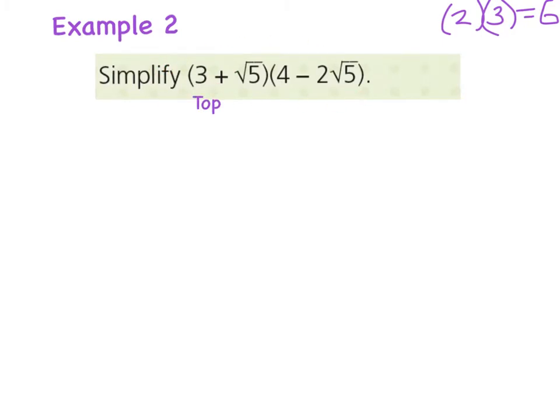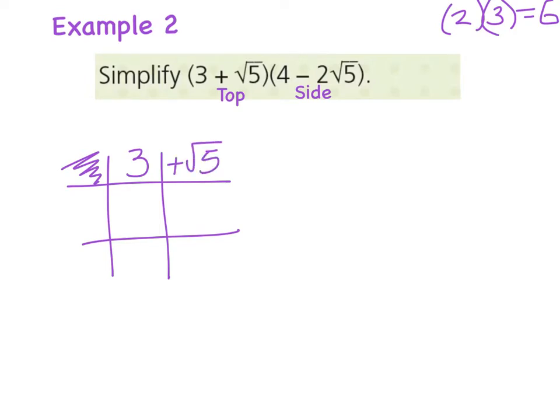So I'm going to write top here and side here. Okay, and I'm going to draw my lines and fill in my information. So on the top I'm going to write 3 and a plus √5 and here on the side I'm going to write a 4 and a minus 2√5. And I'm going to cross multiply to fill those in.